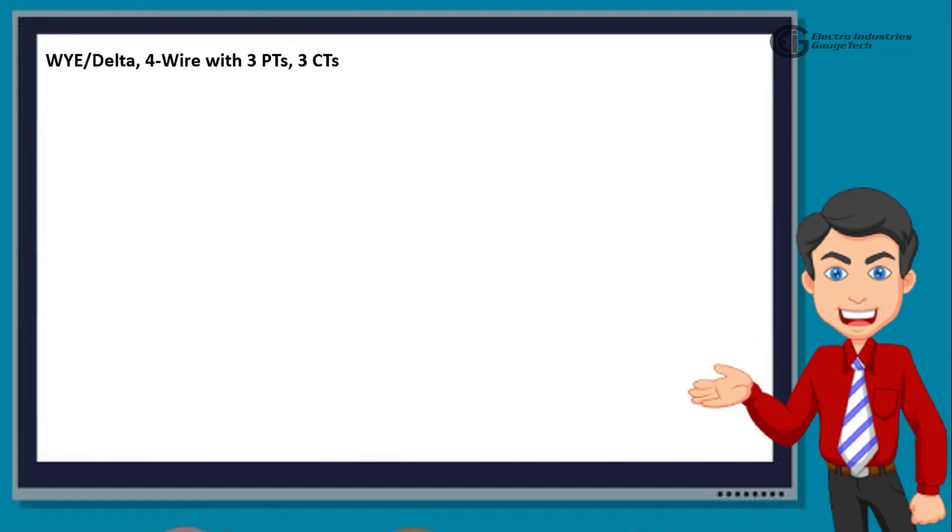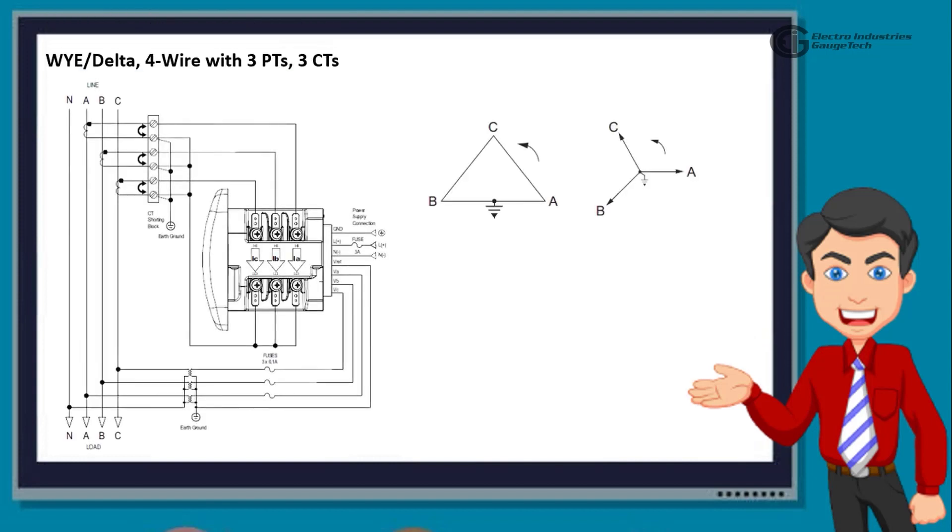Next, we have Y-Delta, 4 wire with 3 PTs, 3 CTs. This diagram shows the 3 phase, 4 wire Y-Delta with PTs, 3 element system. In this case also, when using this wiring, select 3 L Y from the Shark Meter's front panel display.